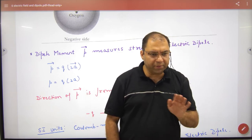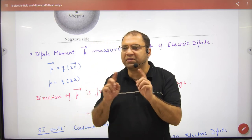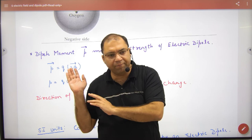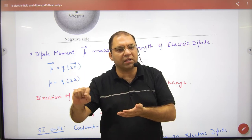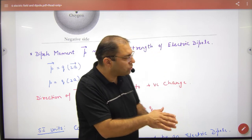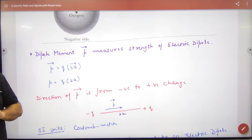To dipole moment P agar strong hooga to uske aaspaas electric field bhi strong hooga. To hum ye abhi prove karenghe ki E ki value dipole ki kaise nikalti hai in terms of P. To P ke saath iska relation nikal leenghe. Iske andar tabhi wo kaya raha ki strength of electric dipole ko dipole moment hamei bataata hai.